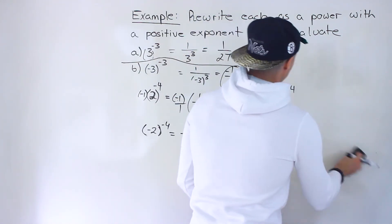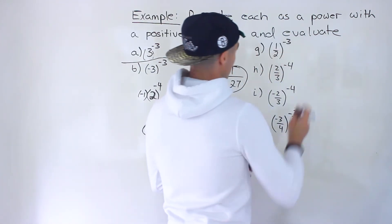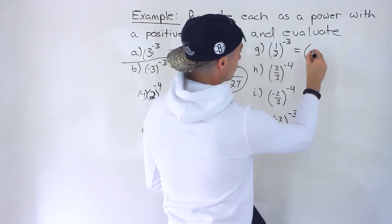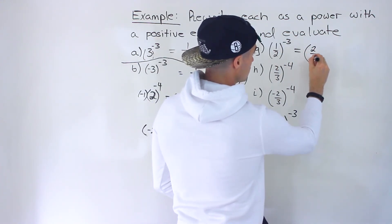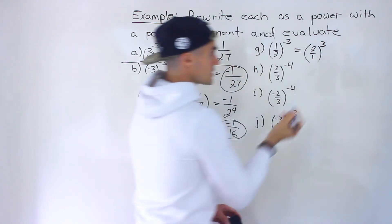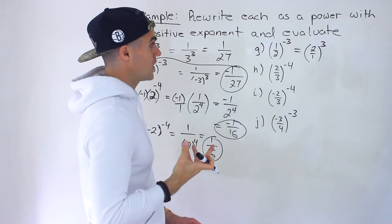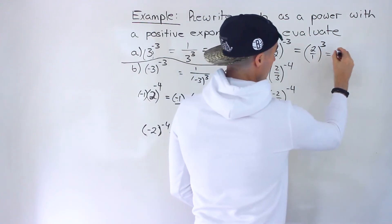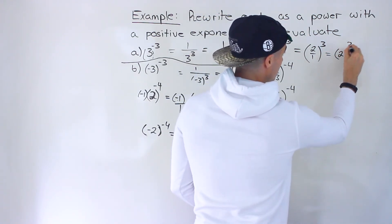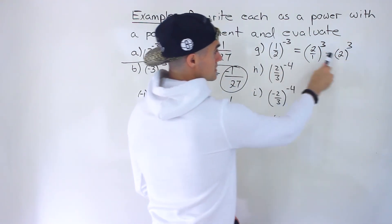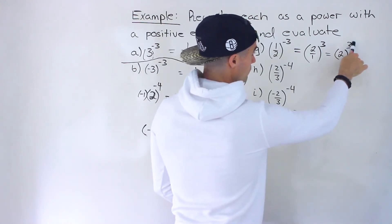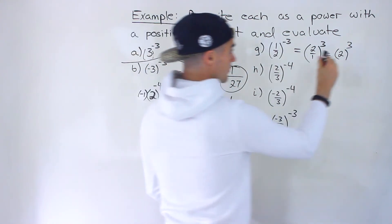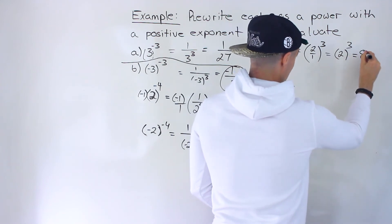For part g, we have 1 over 2 to the power of negative 3. We flip the fraction — 2 over 1 — and change the exponent to a positive, giving us 2 to the power of 3. We rewrote it with a positive exponent, and 2 to the power of 3 gives us 8.